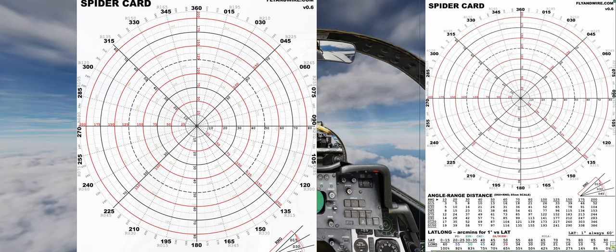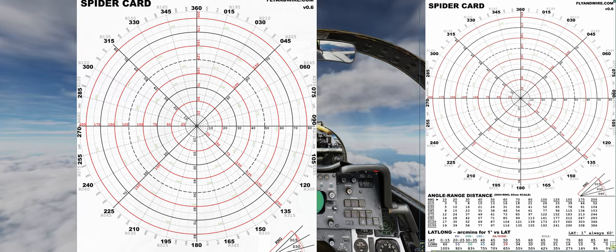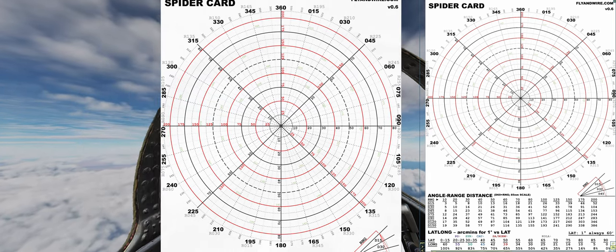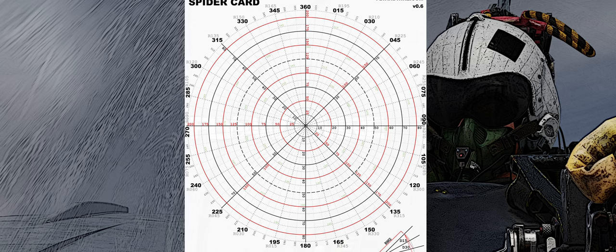To address the common issue of poorly placed bullseyes, especially in casual servers, I opted for a dual scale: a black scale from the bullseye location to 85 nautical miles, and a red scale from the centre to 215 nautical miles. However, the reference values can be divided as required — for example, if zoom is needed, the red scale can be divided by 10, providing references every 2.5 nautical miles.